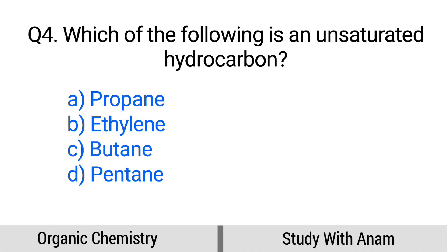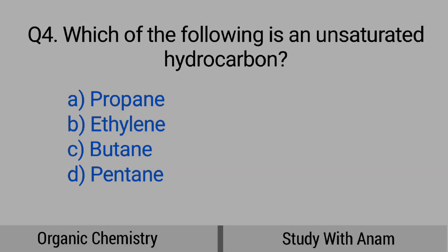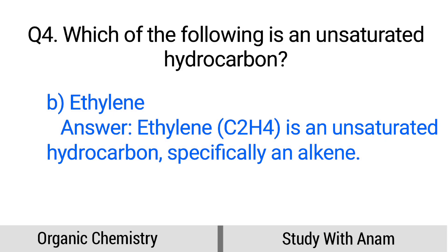Question number 4. Which of the following is an unsaturated hydrocarbon? Option A: Propane, B: Ethylene, C: Butane, D: Pentane. The correct option is option B, Ethylene. Ethylene (C2H4) is an unsaturated hydrocarbon, specifically an alkene.